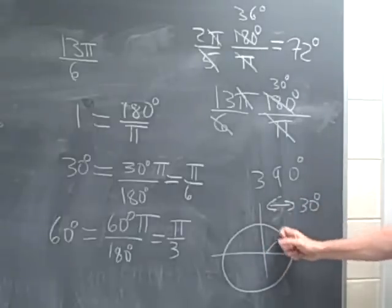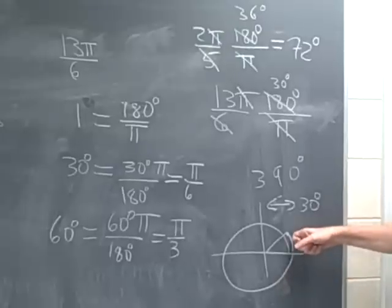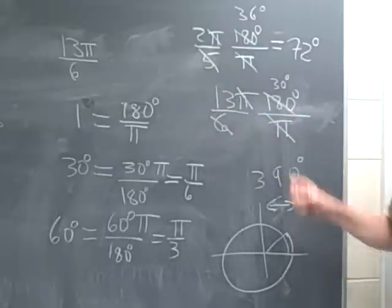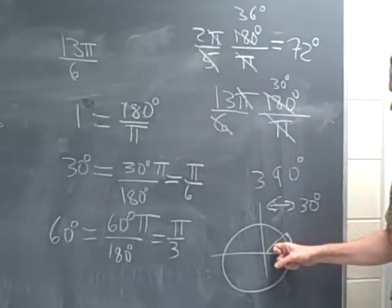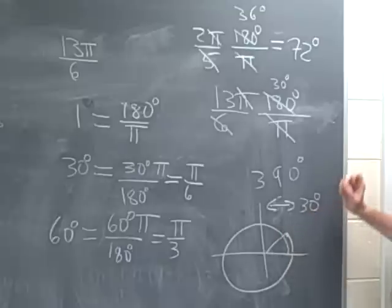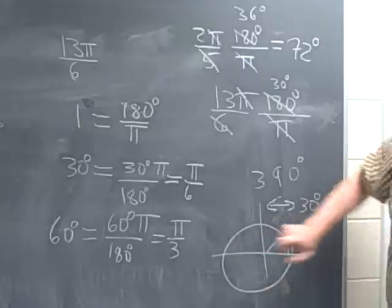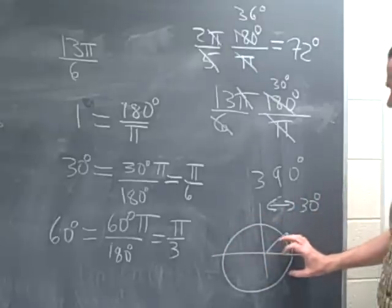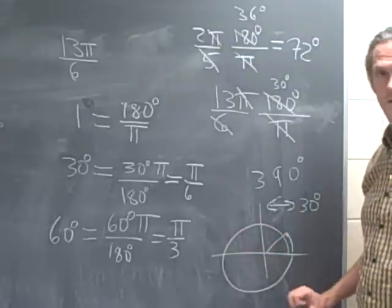So if you're actually measuring how far around you went, you went around 13π over 6. But if you're trying to determine the angle, then you wind up at a 30 degree angle or an angle of π over 6. Similarly, negative angles go this way. And we've talked in other videos about which angles are which.